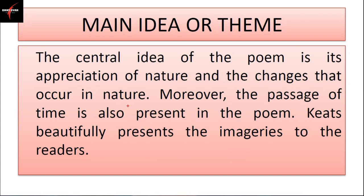The main idea or theme: the central idea of the poem is its appreciation of nature. The title itself — autumn — is a season, and according to different seasons there are natural changes. There are several changes which occur in nature: day, night, morning, afternoon, evening, changes in the weather, changes in the climate. As we learn the poem we'll know exactly what changes occur.